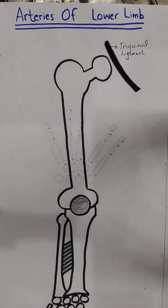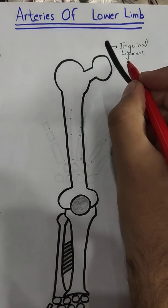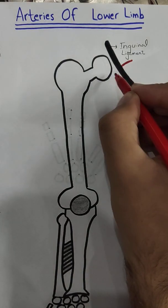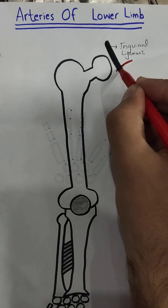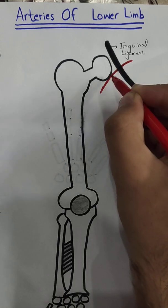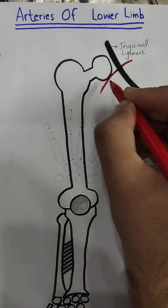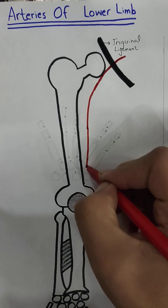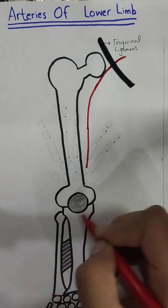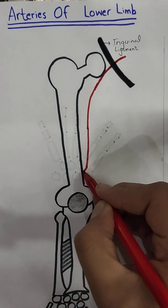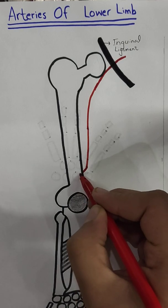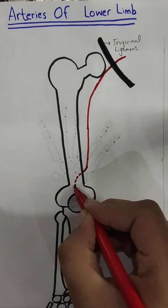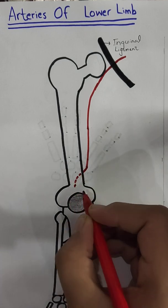The external iliac artery, as it crosses the inguinal ligament, changes into the femoral artery. The femoral artery moves inferiorly, and near the knee joint it moves posteriorly — shown here with dots — where it becomes the popliteal artery.